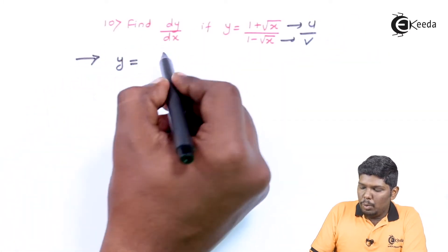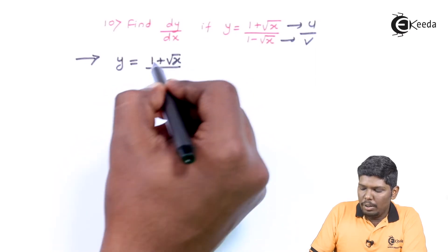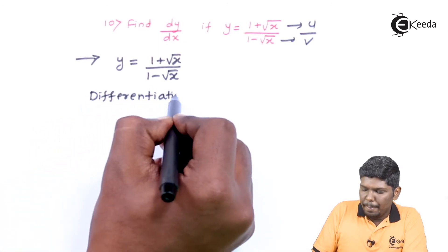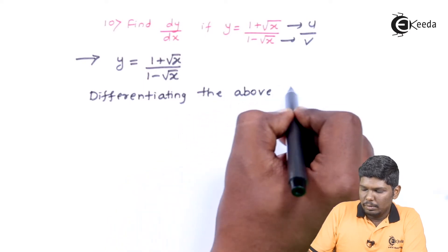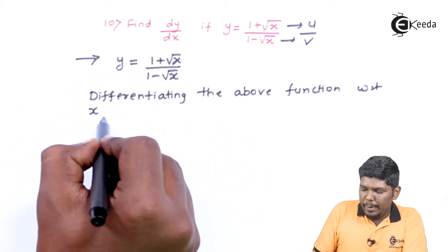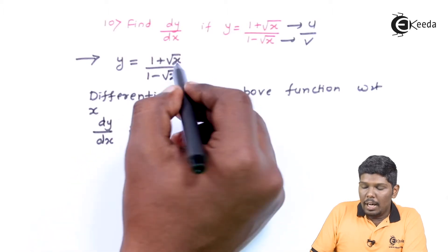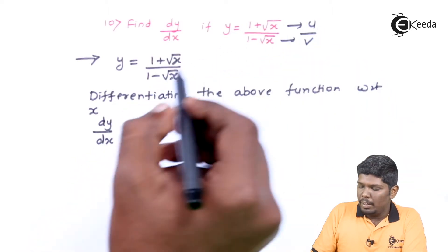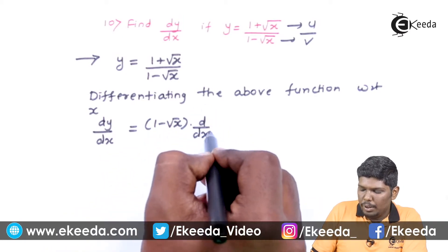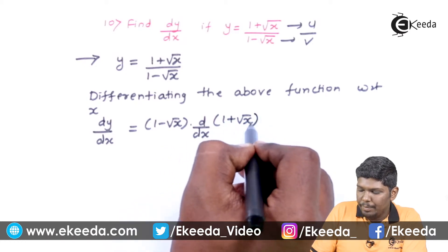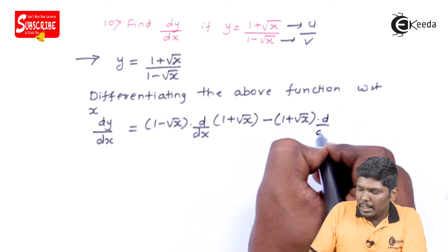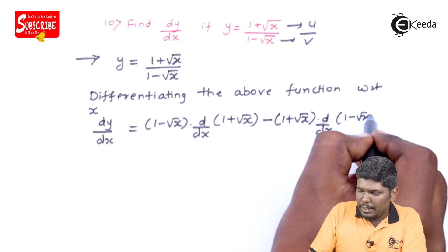y = (1 + √x)/(1 - √x). Differentiating with respect to x, dy/dx is arranged in the form of u/v: v, that is (1 - √x), into d/dx of u which is (1 + √x), minus u, that is (1 + √x), into d/dx of v which is (1 - √x).